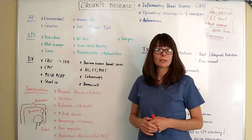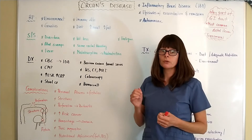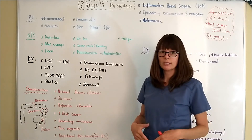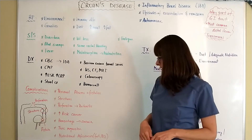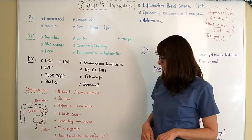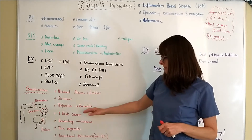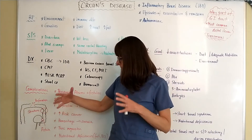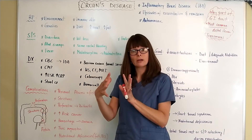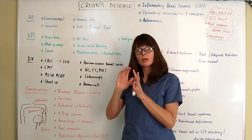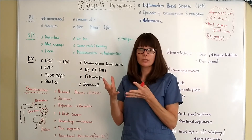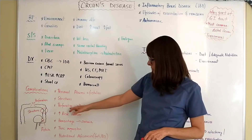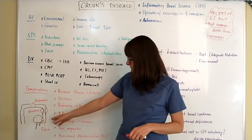A fistula can involve any other organ — in women, it can form between the uterus and the colon, or any other organs in that general digestive area. Because of the widespread inflammation, strictures can also develop, causing narrowing of the digestive tract. When stool can't pass through, it can lead to a bowel obstruction.